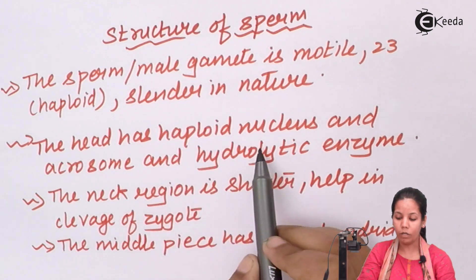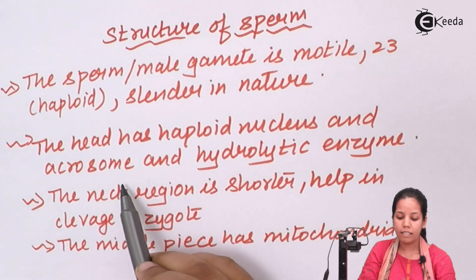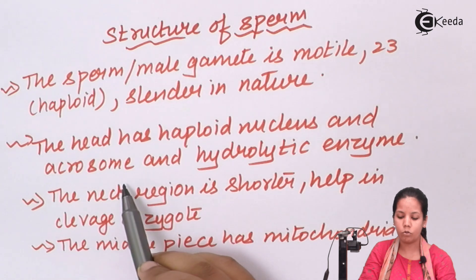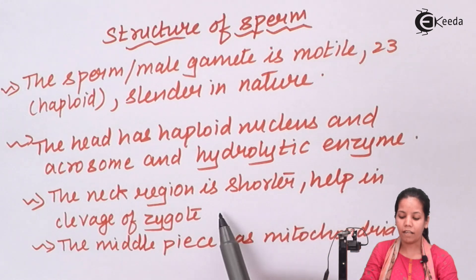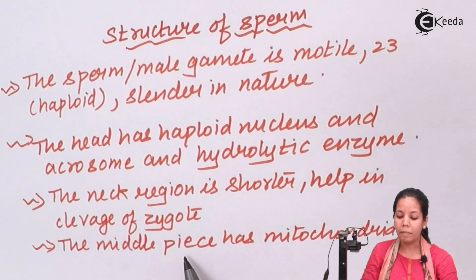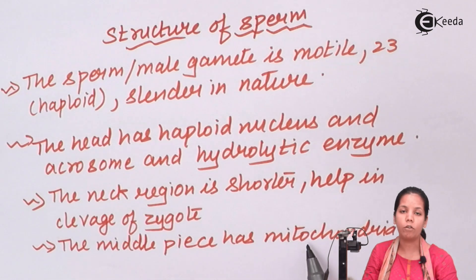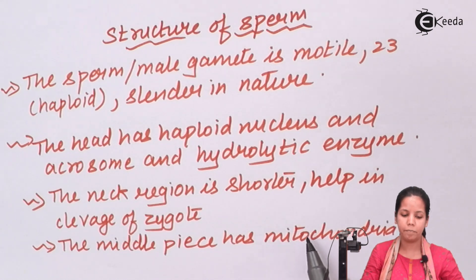The head has a haploid nucleus and an enzyme called acrosome. This acrosomic region has hydrolytic enzymes which help in the activity of the sperm. The neck region is slightly shorter and helps in cleavage of the zygote. The middle piece has mitochondria, which provides energy to the sperm during movement.